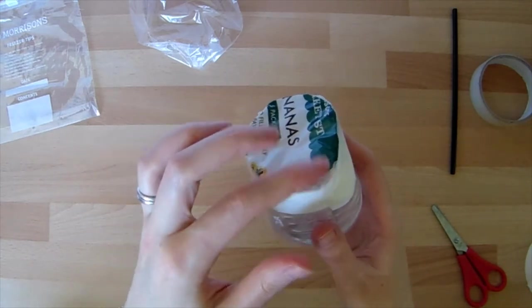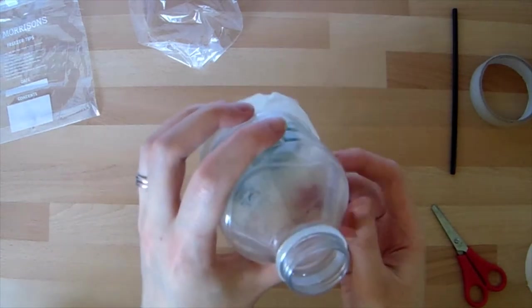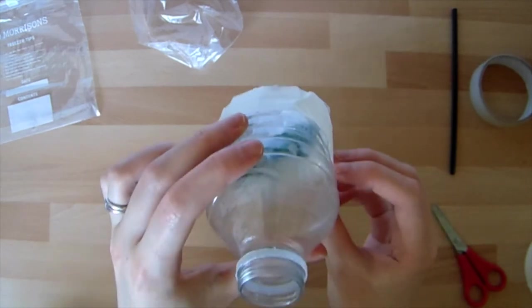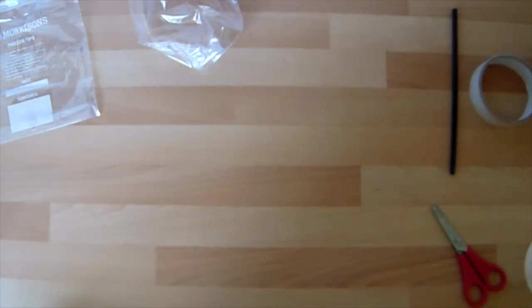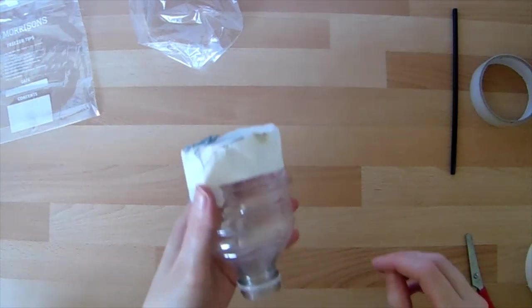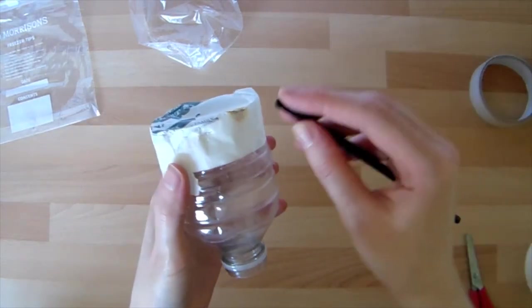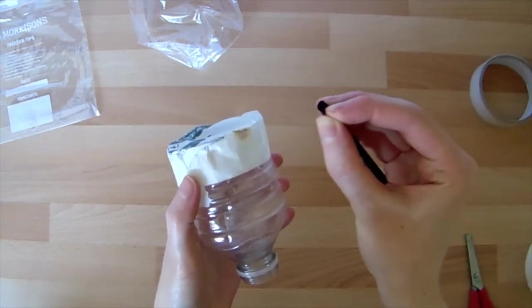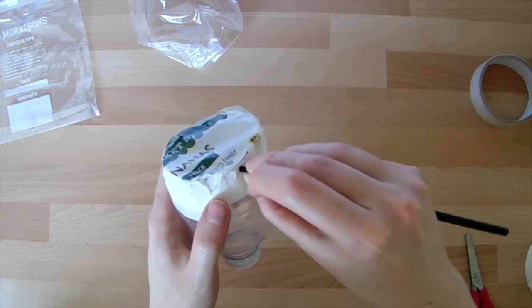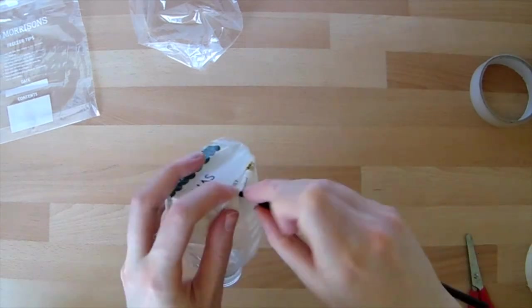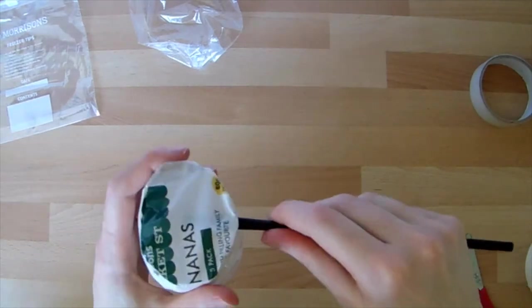Now the last thing we need to do at this stage is to put a little hole where we put our hole punch so we can get our straw back through again. Once you've got your hole, you can pop your straw back in. You might want to fold your straw slightly at the end and then feed it through your hole.